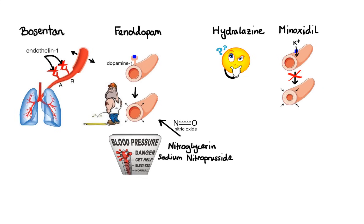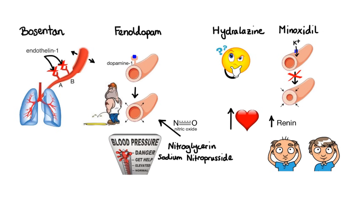While these agents significantly decrease peripheral resistance, they also produce significant compensatory reflex tachycardia and renin release. For that reason, these drugs are typically administered in combination with a diuretic and a beta blocker. On the flip side, topical application of minoxidil promotes hair growth, which is why this drug is used more often for treatment of baldness rather than hypertension.